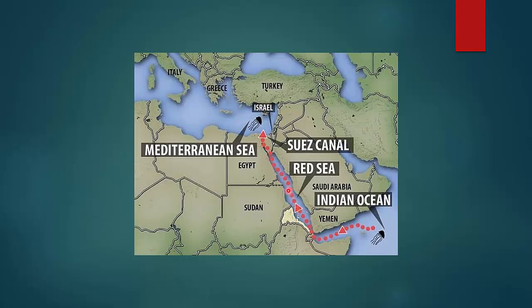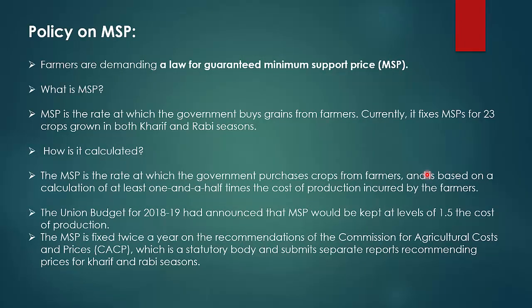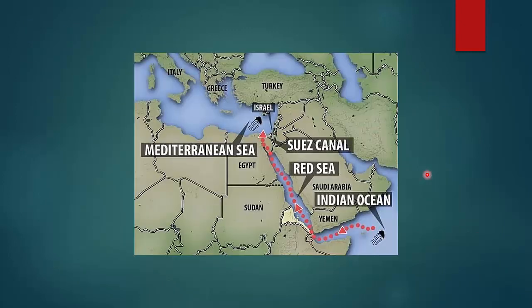If Europe wants to reach India and has to go around Africa instead of through the Suez Canal, it significantly increases the cost of transportation for goods. The Suez Canal is controlled by Egypt and connects the Mediterranean Sea and the Red Sea — its position and controlling country are important to know.